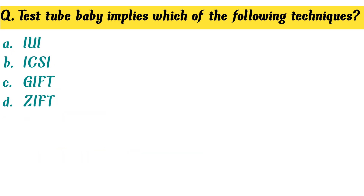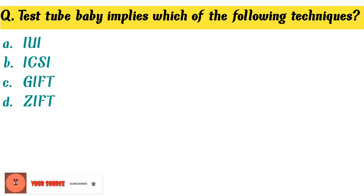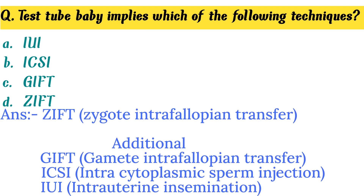Test tube baby implies which of the following techniques? Option D. ZIFT — Zygote intra-fallopian transfer is the correct answer. GIFT is gamete intra-fallopian transfer. ICSI is intracytoplasmic sperm injection. IUI is intrauterine insemination.